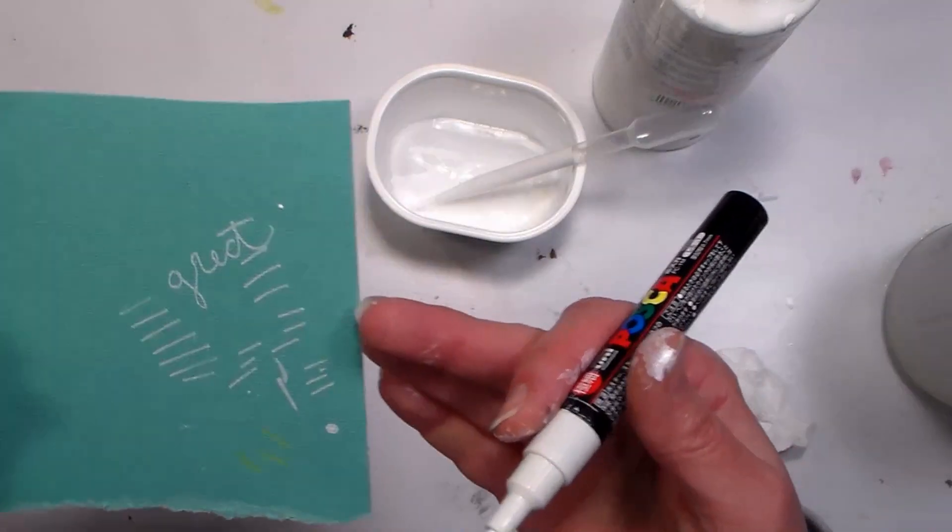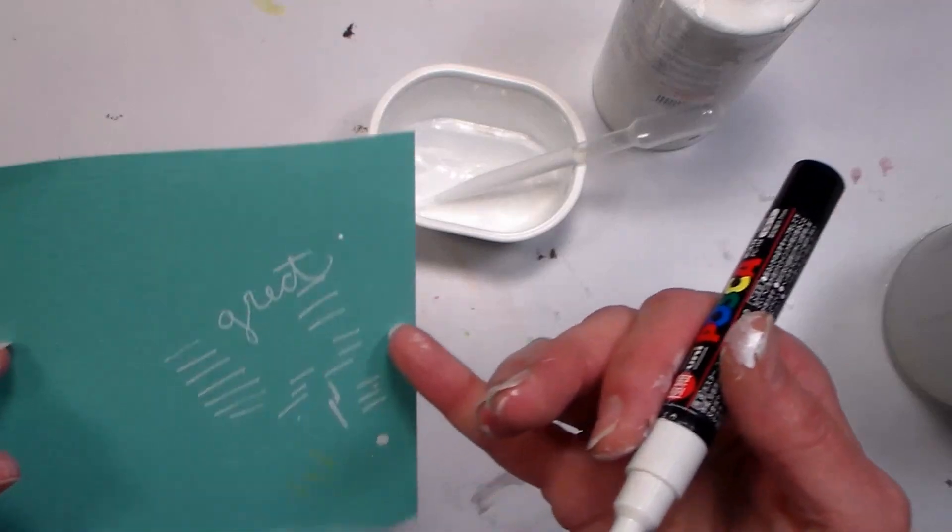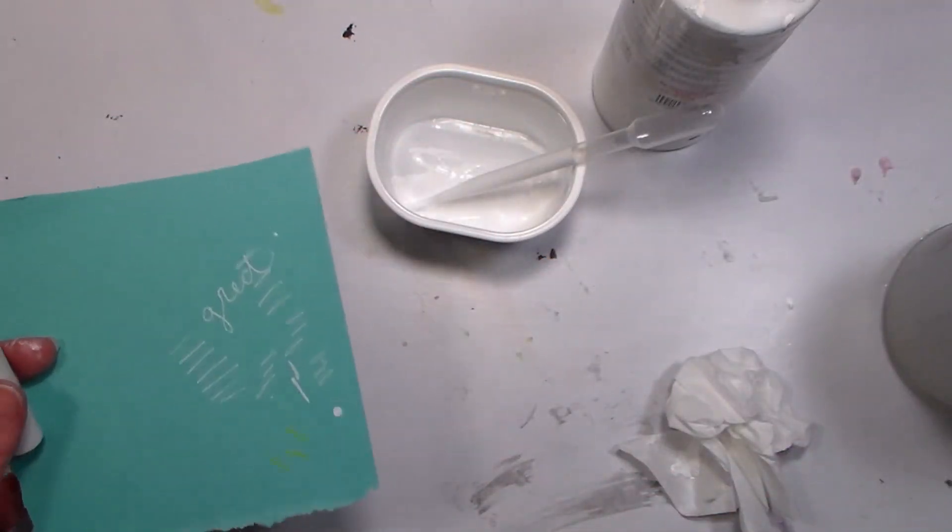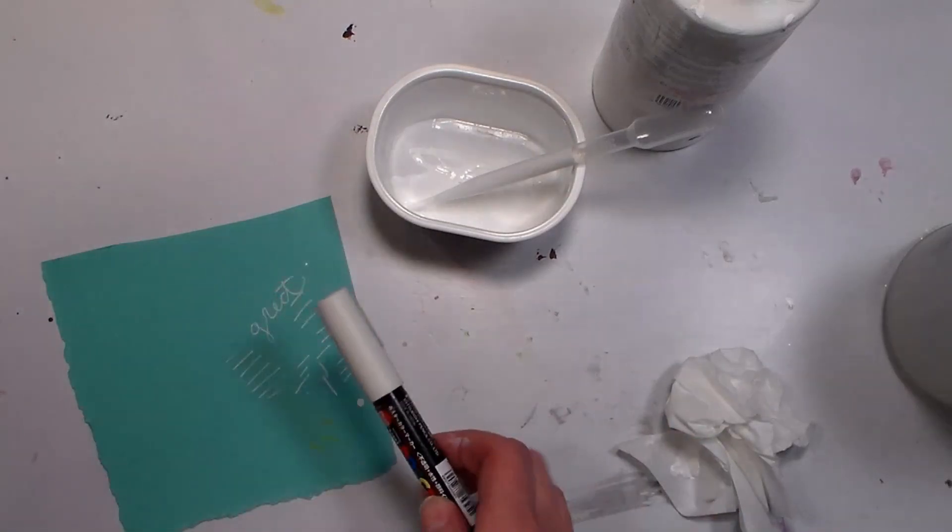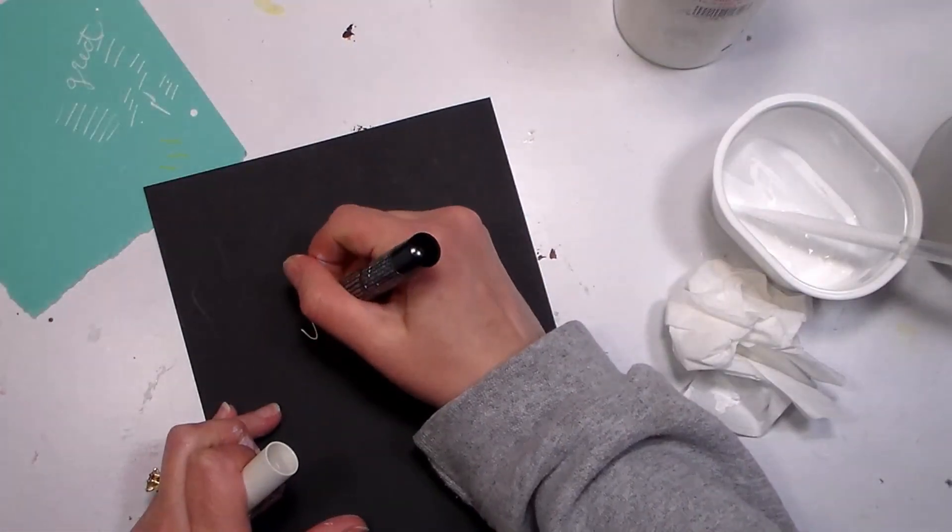Maybe I would have been able to go a little bit thicker with my paint, I'm not sure, but it does look pretty opaque. You could also use gesso. I could show you this on a more contrasted paper. Let me go find a black piece of paper to show you on that.